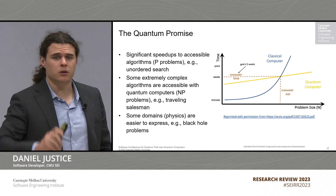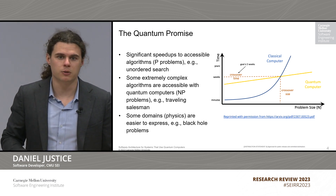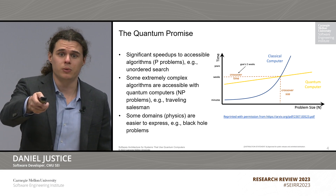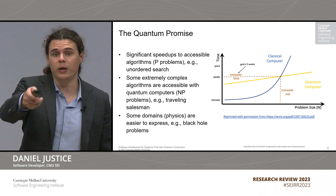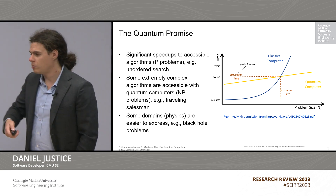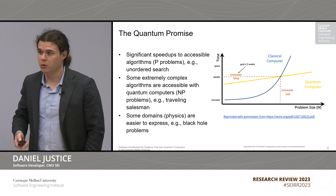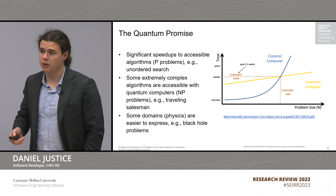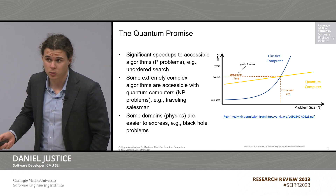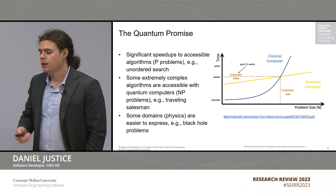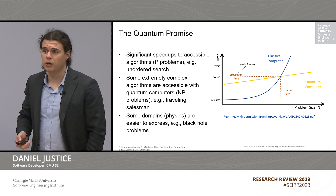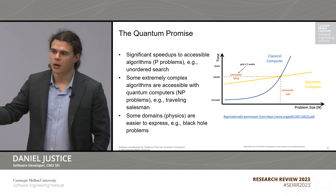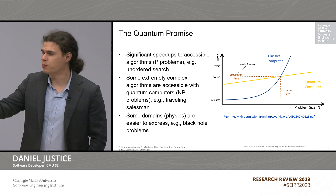This figure shows that for certain types of problems, this crossover is going to be at the point of weeks of computation. We're starting to get into a realm of classical compute where weeks of computation is becoming standard for a single core. Machine learning is a great example of this, and you'll also see it in medicine, biology, and protein folding.